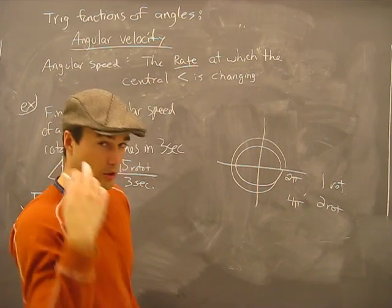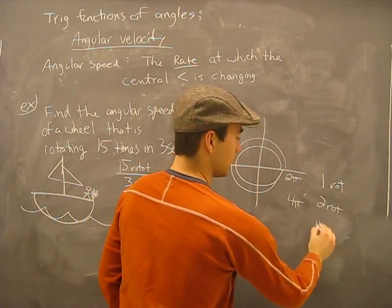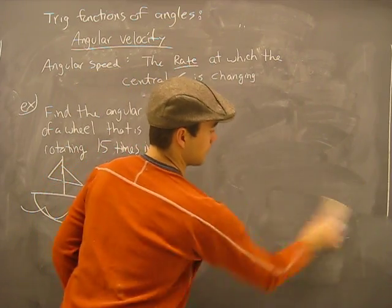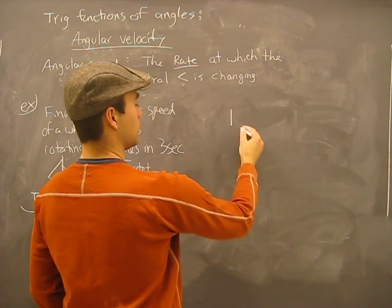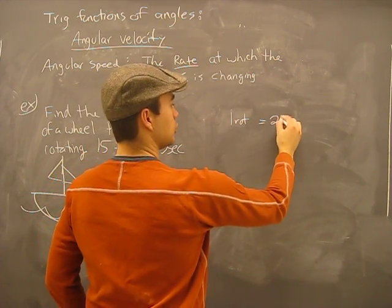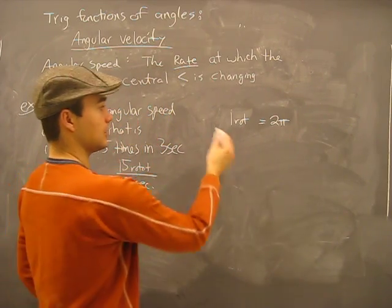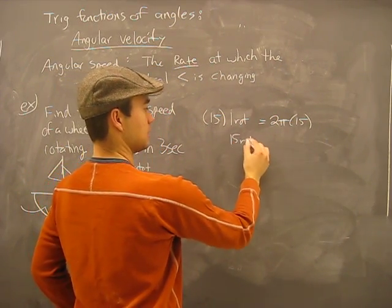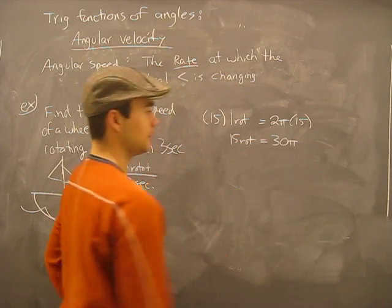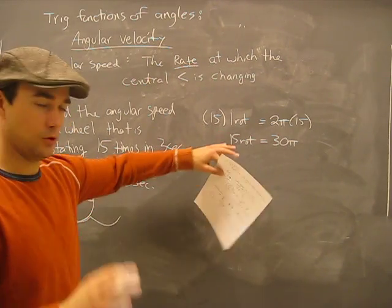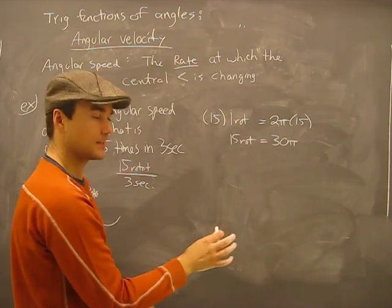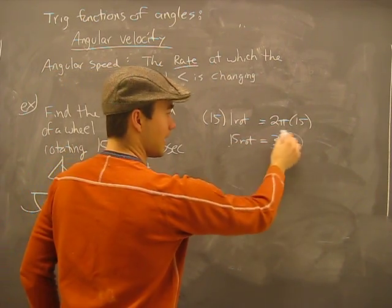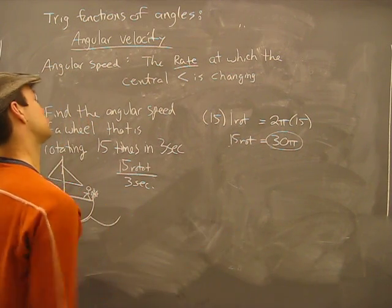We just need to use common sense: if we do fifteen rotations, well, fifteen times two pi will give us thirty pi. Symbolically speaking, in math terms: one rotation equals two pi radians. I can multiply both sides by fifteen, because I'm going to show fifteen rotations, and I get fifteen rotations equals thirty pi radians.